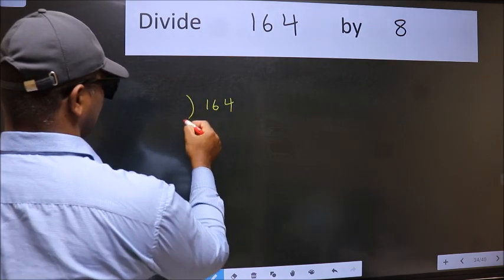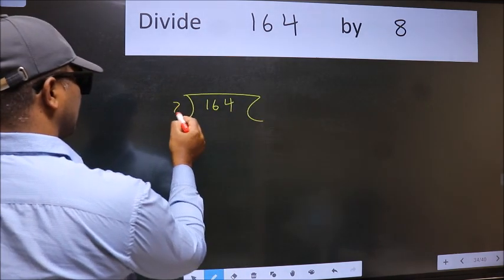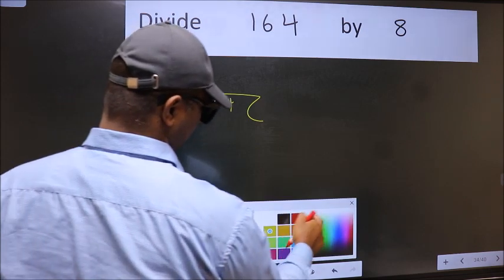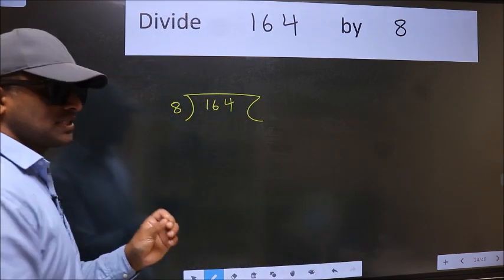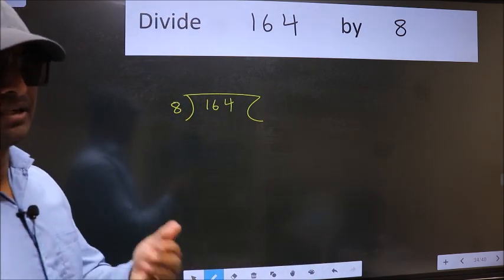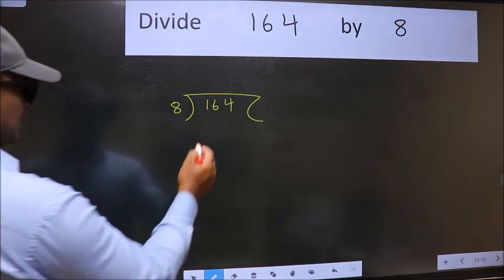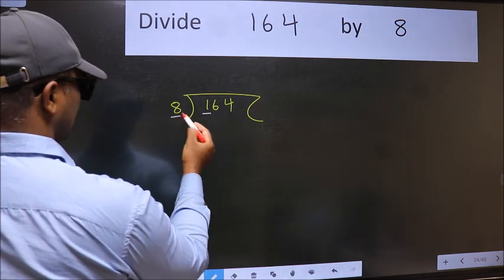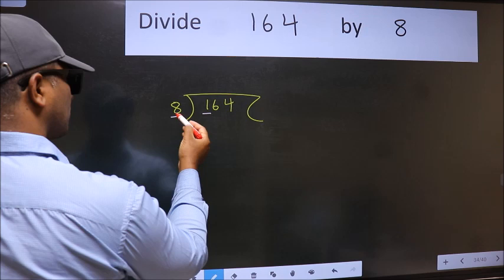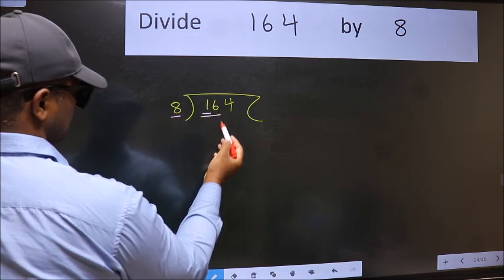164 here, 8 here. This is your step 1. Next, here we have 1 and here 8. 1 is smaller than 8, so take two numbers: 16.